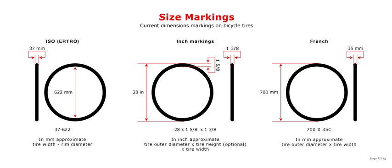Beaded-edge tires are mounted on hooked bead rims. They are marked with an overall diameter code and a nominal section width code, separated by a cross symbol. An example of such a marking is 20×1.375.